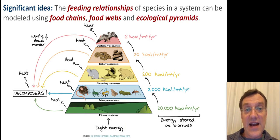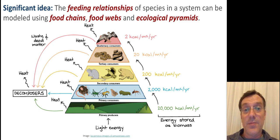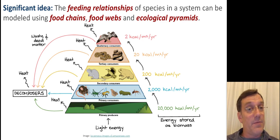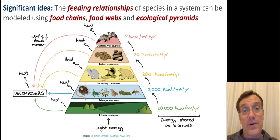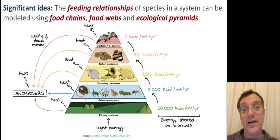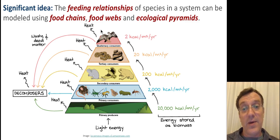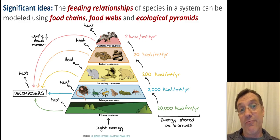The next big idea in Topic 2 is the concept of food chains or food webs, which we touched on in Topic 1.3, energy and equilibria. In Topic 2, we're going to look at it in more depth through the idea of an ecological pyramid, because we're talking about the biomass or energy that's available at every trophic level within an ecosystem.